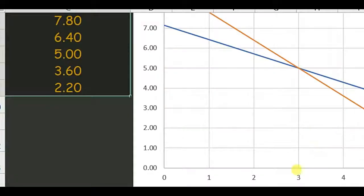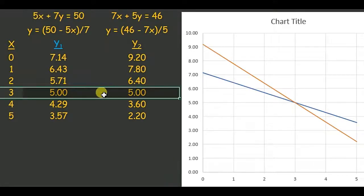You can see in the table also, when x is 3, y1 and y2 are both the same. So the point of intersection would be the answer for this question.